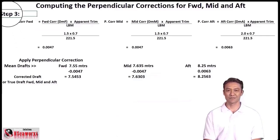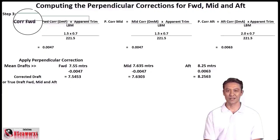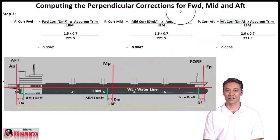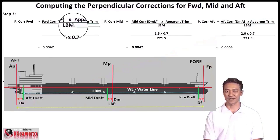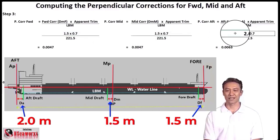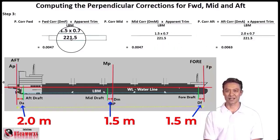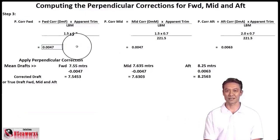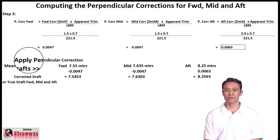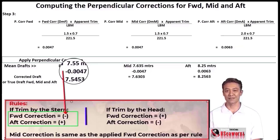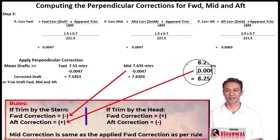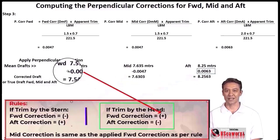Step 3: computing the perpendicular corrections for forward, midship, and aft. The formula: perpendicular correction for forward, mid, and aft equals the correction value (DMF, DMM, and DMA respectively) multiplied by apparent trim over length between marks. In this example: forward and mid corrections use 1.5, and the aft correction uses 2.0, multiplied by 0.7 over 221.5. Now we apply the rule of thumb: if trimmed by the stern, forward correction is subtracted; if trimmed by the head, forward correction is added. The midship follows the forward rule, while the aft is opposite.